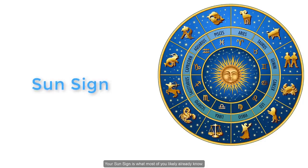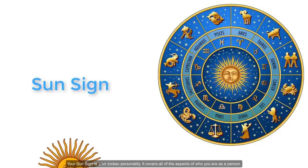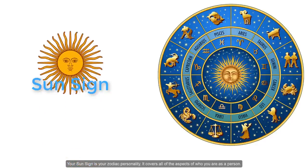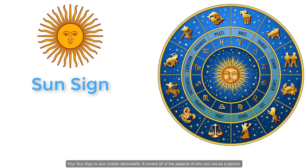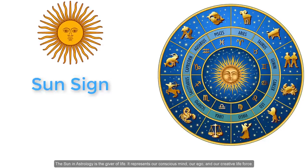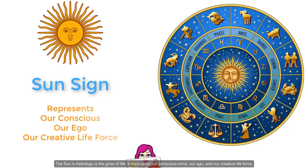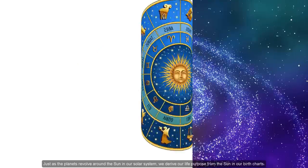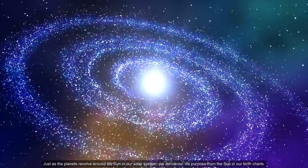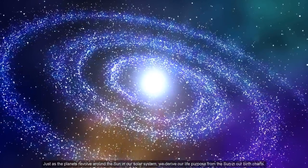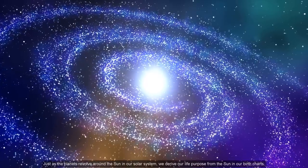Your sun sign is what most of you likely already know. It is simply calculated by the day and month of your birth. Your sun sign is your zodiac personality — it covers all aspects of who you are as a person. The sun in astrology is the giver of life. It represents our conscious mind, our ego, and our creative life force. Just as the planets revolve around the sun in our solar system, we derive our life purpose from the sun in our birth charts.